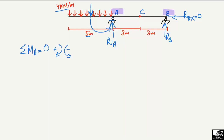This distributed load, when converted to a point load, will act at the center and creates an anti-clockwise moment about point A, so it is taken as negative. So it is: minus 4 kN/m multiplied by 5 meters (the distributed length), multiplied by the moment arm. The moment arm is the distance from where the force acts to point A, which is 5 divided by 2 = 2.5 meters.